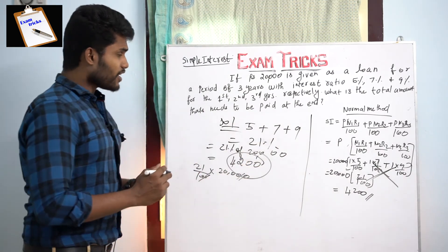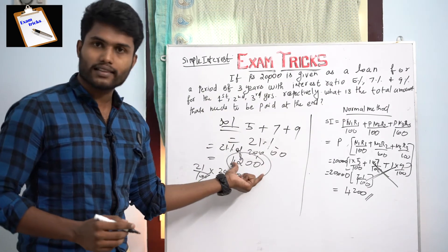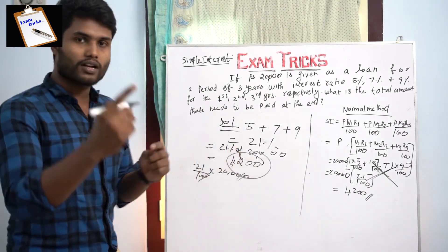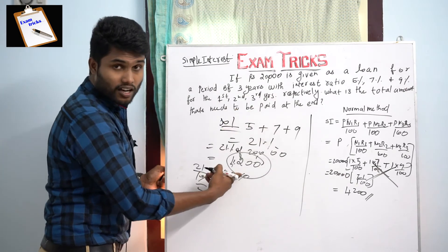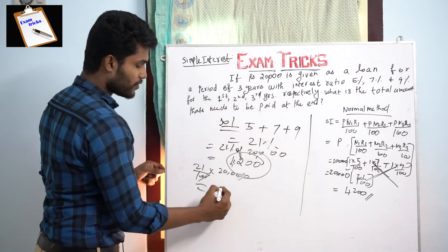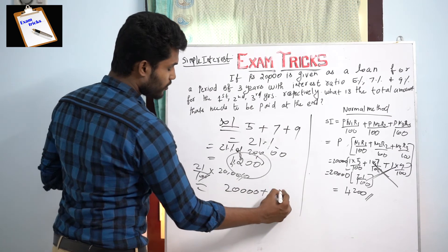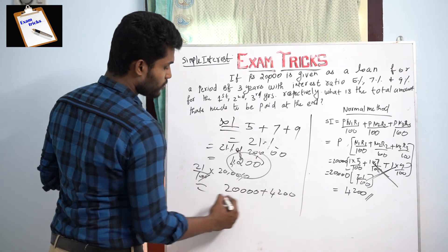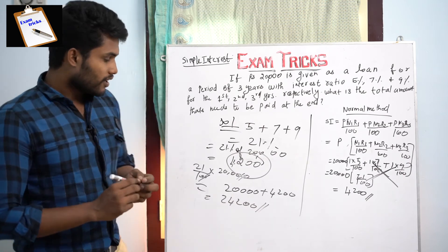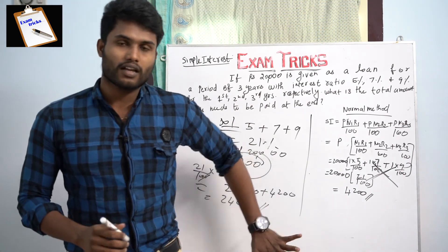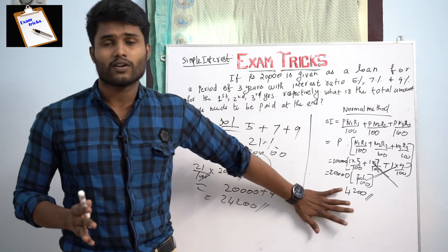Actually, what is the total amount? The principal is 20,000. So 20,000 plus 4,200 — total amount: 20,000 plus 4,200 — the answer is 24,200.